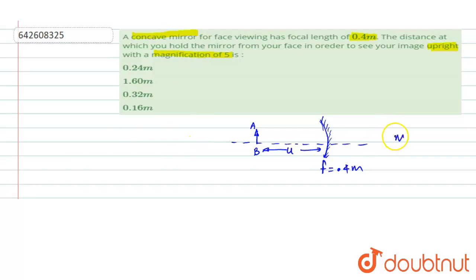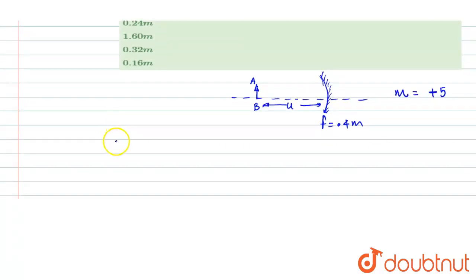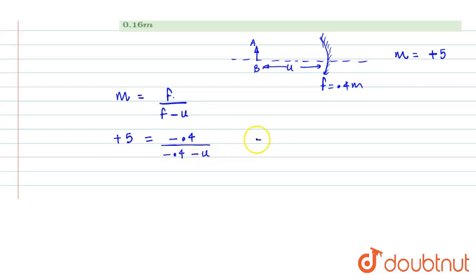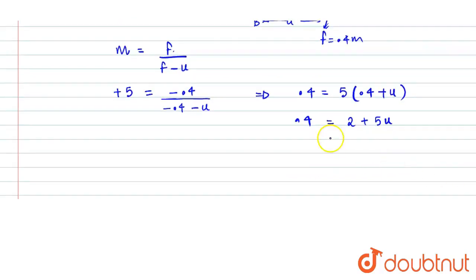Such that we see a magnification of five times and also the image should be erect. Since the image is upright, the magnification should be plus five. The relation between magnification and focal length is: magnification equals f divided by (f minus u). Substituting, plus five equals minus 0.4 divided by (minus 0.4 minus u), giving us 0.4 equals 5 times (0.4 plus u), that is 2 plus 5u equals 0.4, or 2 minus 0.4 equals 1.6 divided by 5 with a negative sign.